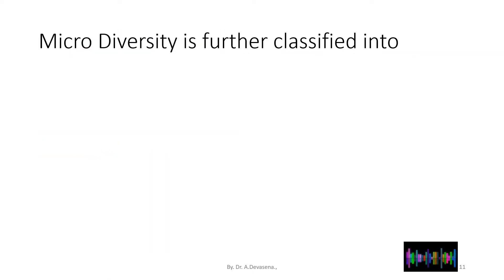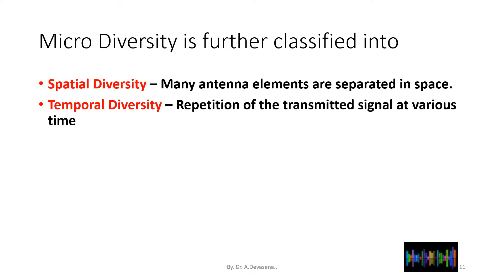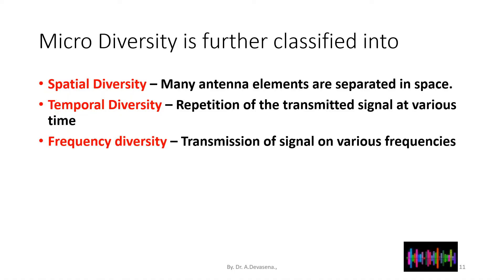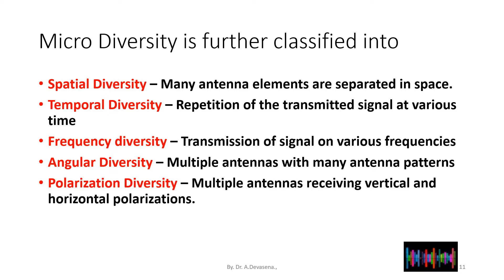Microdiversity is further classified into: spatial diversity, where many antenna elements are separated in space; temporal diversity, which is repetition of the transmitted signal at various times; frequency diversity, which is transmission of a signal on various frequencies; angular diversity, using multiple antennas with different beam patterns; and polarization diversity, where multiple antennas receive vertical and horizontal polarizations.